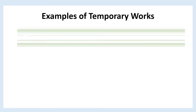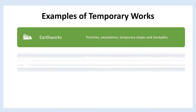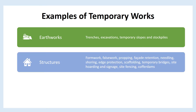Examples of temporary works are: 1. Earthworks such as trenches, excavations, temporary slopes and stockpiles. 2. Structures such as formwork, falsework, propping, facade retention, needling, shoring, edge protection, scaffolding, temporary bridges, site hoarding and signage, site fencing, and coffer dams.